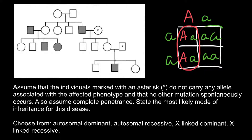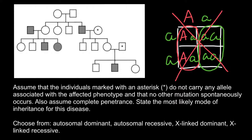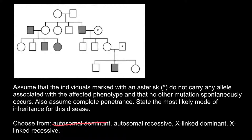The other 50% would be unaffected and genotypically normal. That means these three children would have to have two normal alleles. But this female has two normal alleles (small a / small a), and the person marked with asterisk is also genotypically normal with two normal alleles. In such a cross we wouldn't be able to see any affected children, so this cannot be an autosomal dominant genetic disorder — we can cross out this variant.